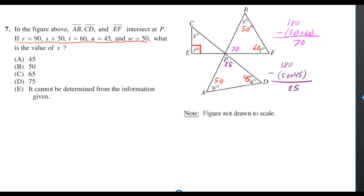Once you have 50 and 60 in the top right triangle, you can add up 50 and 60 to get 110, and subtract from 180 to figure out the third angle. So you get 70.